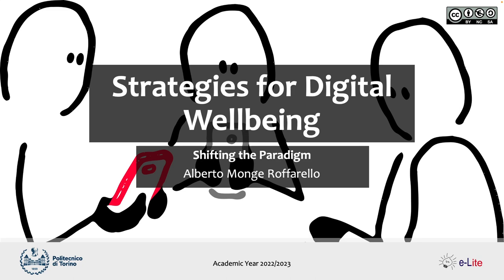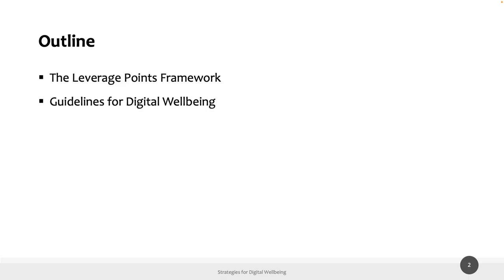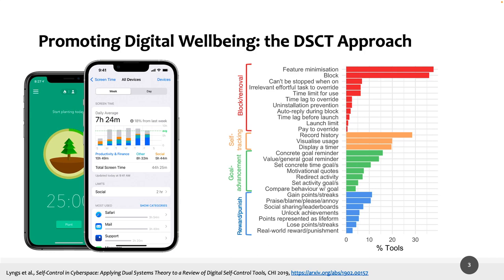Today I will try to show you how the community is moving towards a new direction to overcome the limits of contemporary strategies for digital well-being — which are basically digital self-control tools. This is the outline for today: we will analyze the leverage points framework proposed by the Center for Humane Technology, and then analyze a set of heuristics for digital well-being. We will also learn together what a heuristic is.